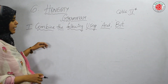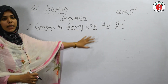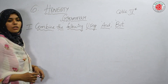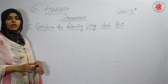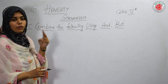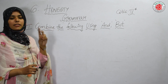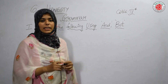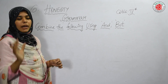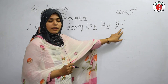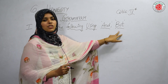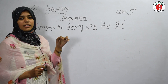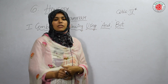The activity heading is: combine the following using 'and', 'but', etc. The first example: 'Ramu took out his book' and 'Ramu did not write anything.' These two sentences combine into one: 'Ramu took out his book but did not write anything.' The word 'but' here is the conjunction joining these two sentences.